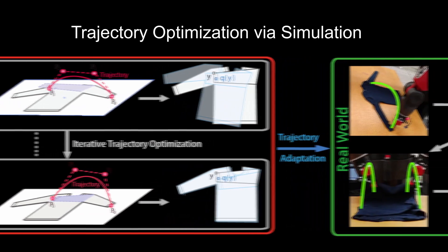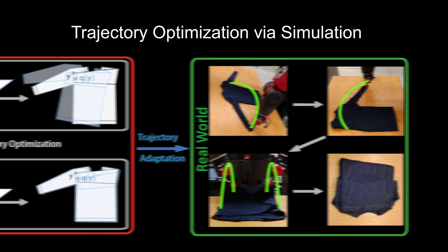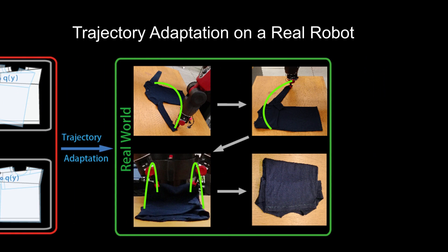Then, all the folding trajectories are exported, adapted, and implemented on a real robot. Green arcs illustrate the actual trajectories of robotic arms.